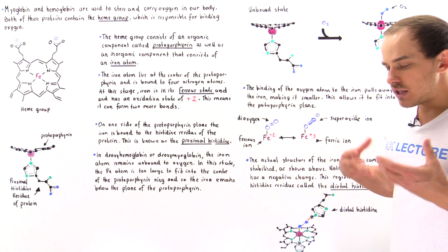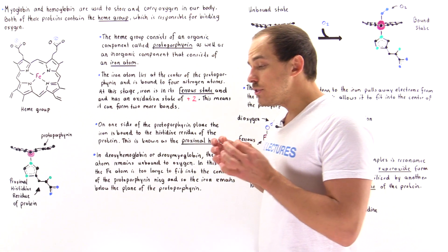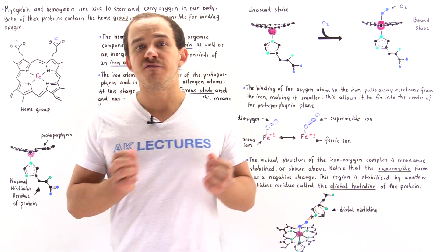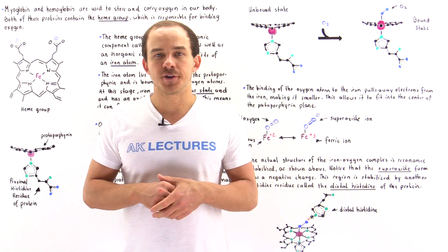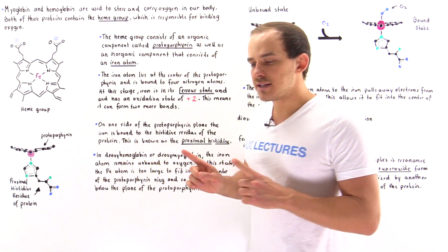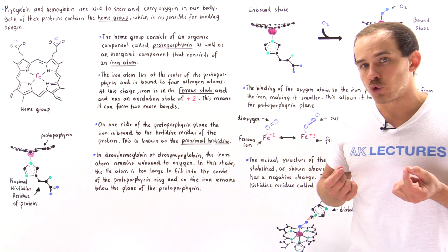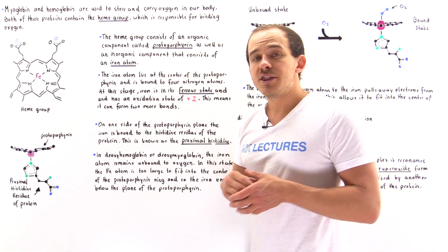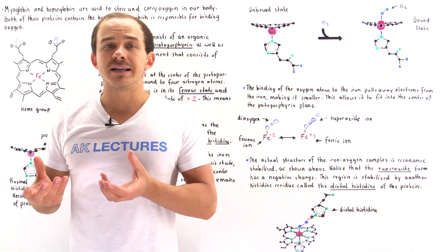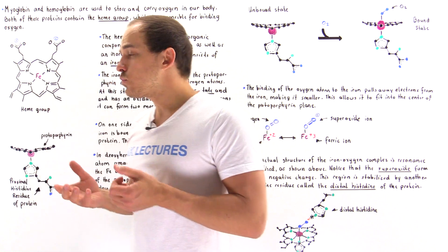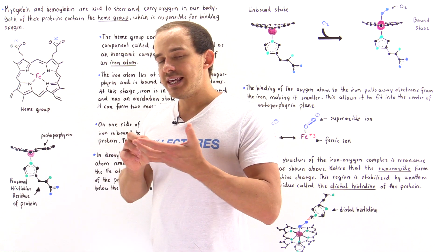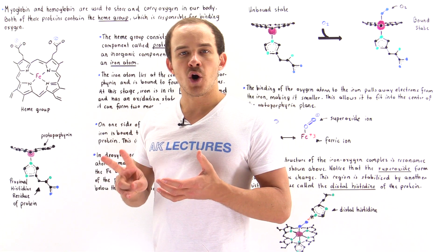In this lecture, what I'd like to focus on is how these two proteins are actually capable of binding to oxygen in the first place. These two proteins contain a special prosthetic group known as the heme group that assists the protein in actually binding the oxygen, and the heme group has the following structure. The heme group consists of two components.